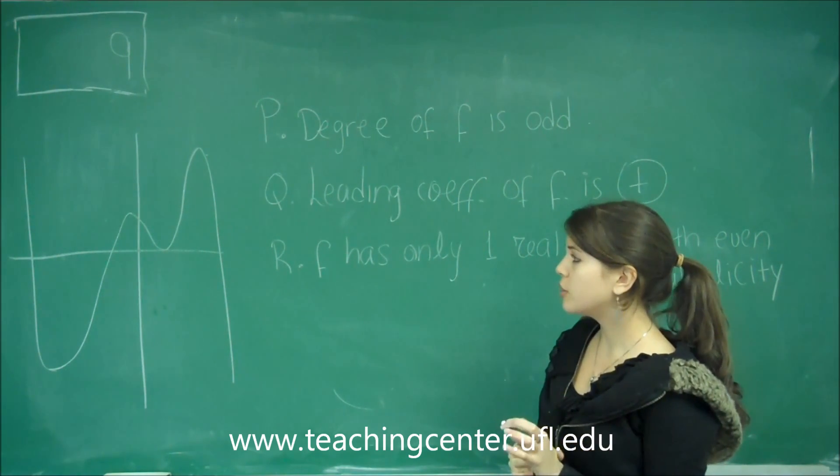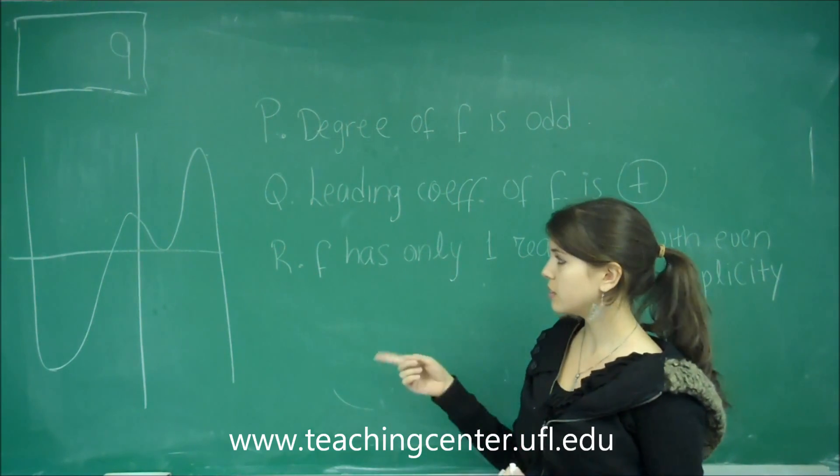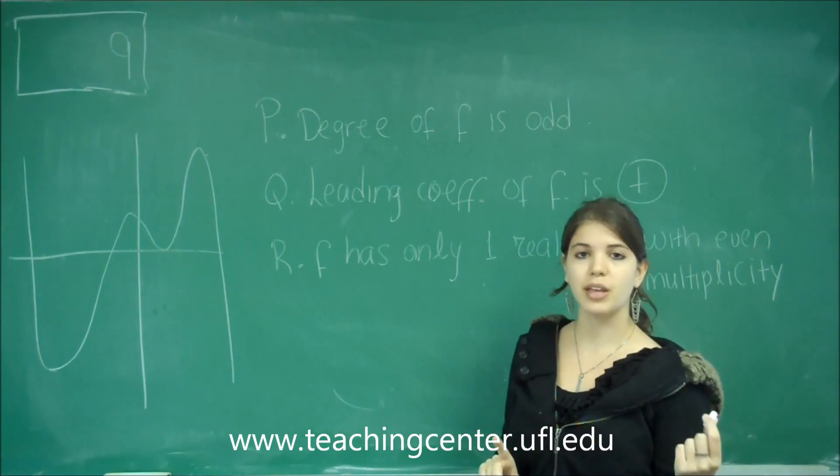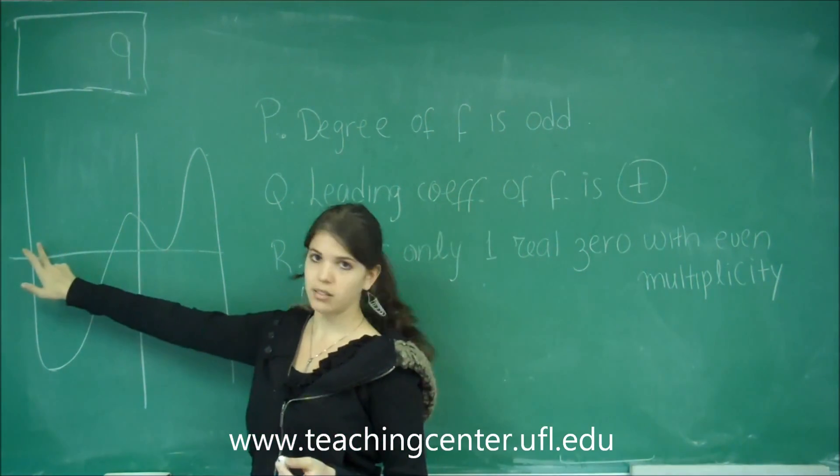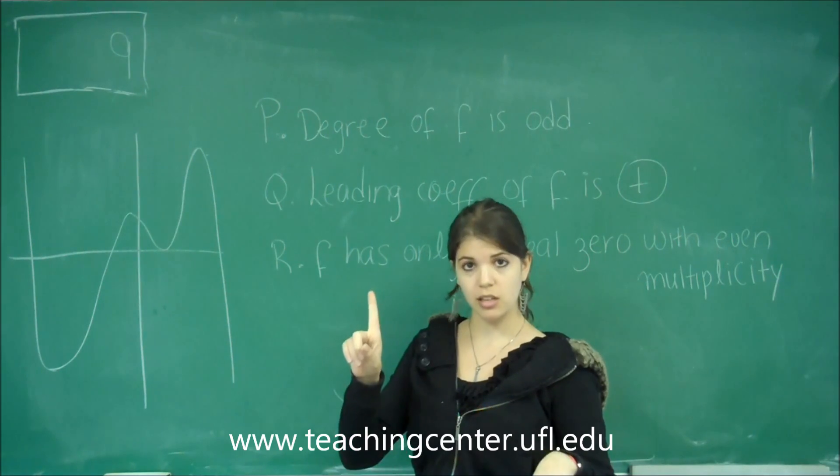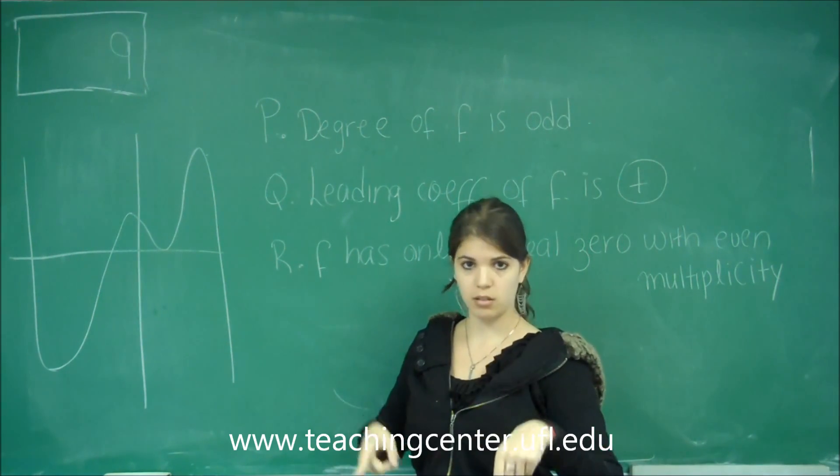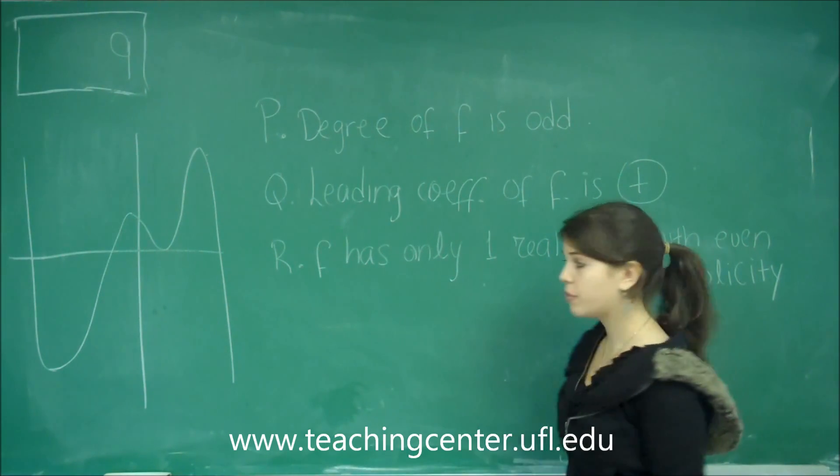The way that we would find whether the degree is odd or even is looking at the ends of the graph. This end is going down, that end is going up. So, the options are the two ends are going different ways, or the two ends are going both ways, up or down. Let's look at functions that we know.